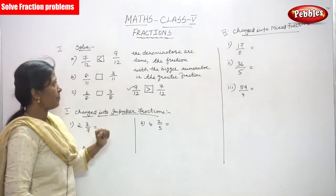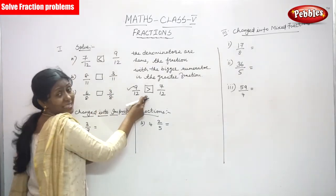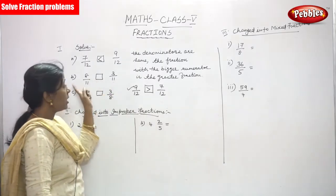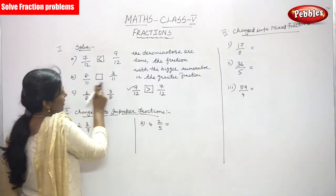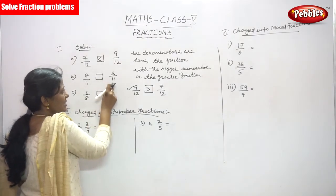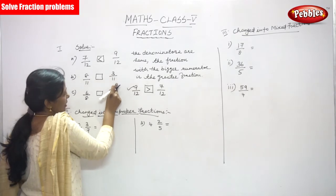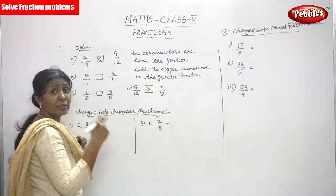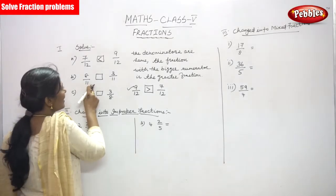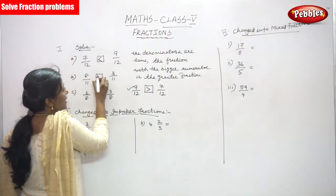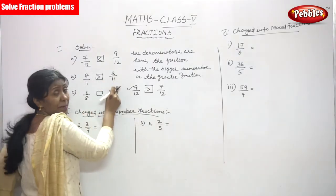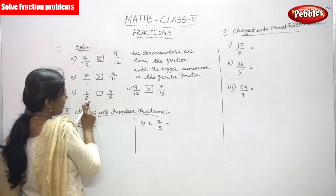Next: 8 by 11 and 3 by 11. In both fractions the denominators are the same, so it is a like fraction. You only need to look at the numerator. The bigger numerator is 8, so 8 by 11 is greater than 3 by 11.